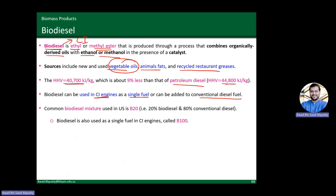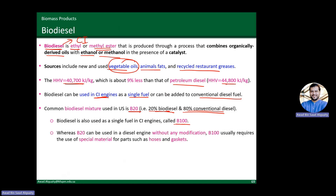Common biodiesel mixtures are B20 — 20% biodiesel and 80% conventional diesel — or B100, which is 100% biodiesel. With B20, no modifications to existing engines or fuel supply lines are needed. But with B100, you need to change hoses and gaskets, because biodiesel and other oxygenated biofuels tend to react with rubber and degrade it. You just need different materials in the fuel supply line — materials compatible with these oxygenated fuels rather than fossil diesel.